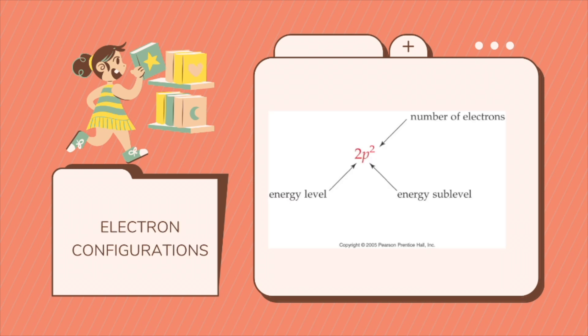So let's take, for example, how electron configuration is written. The electron configuration of an atom is a shorthand method of writing the location of electrons by sublevel. The sublevel is written followed by a superscript with the number of electrons in the sublevel. So if it is in the 2p: 2 is your energy level (n), p is your energy sublevel, and the superscript 2 is your number of electrons. If the 2p sublevel contains 2 electrons, it is written as 2p².